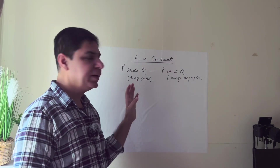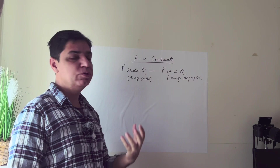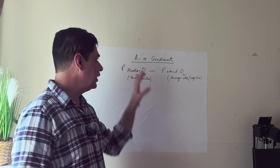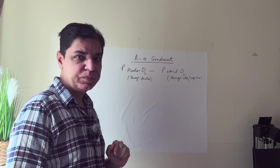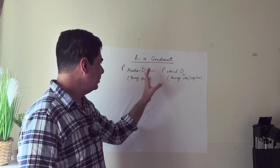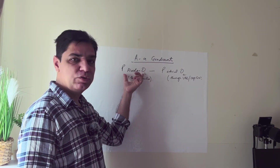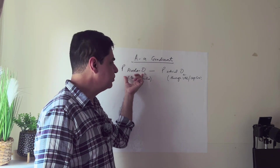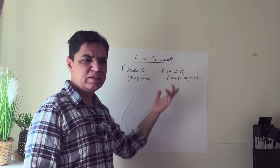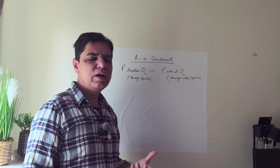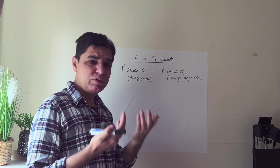The AA gradient is the term used for the difference between the alveolar and the arterial oxygen. By formula, it is basically the difference between the concentration of alveolar oxygen and arterial oxygen. Normally, when we take a breath in, there is 21% oxygen in the air.